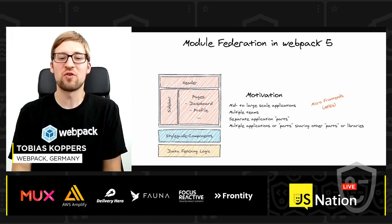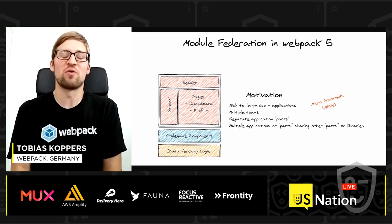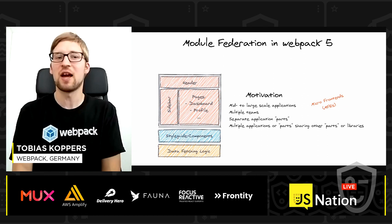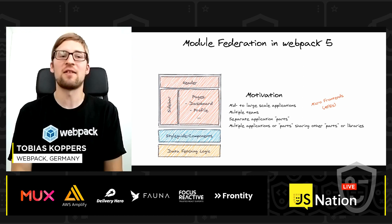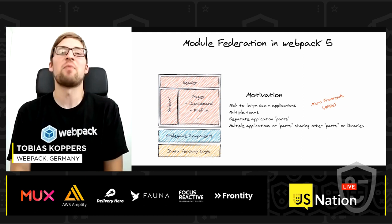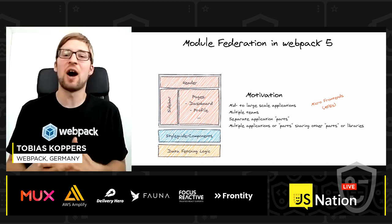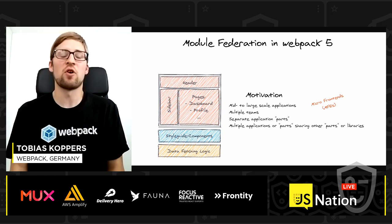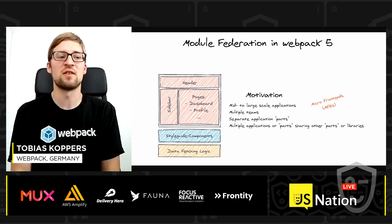The motivation is: you have a large to mid-scale application and you work with multiple teams on multiple application parts. You've separated your application into multiple parts — like micro frontends but also logical parts — and these parts should be developed independently by different teams. Another requirement is that multiple parts share common libraries or share other parts, such as a header component, sidebar component, a style guide components library, data fetching logic, or business logic.